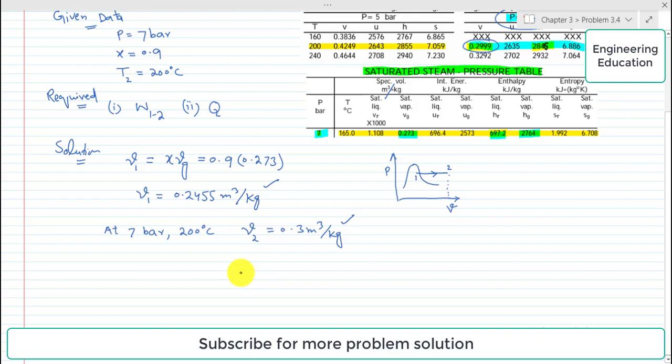Also, for finding the work input, we have the expression: work from 1 to 2, that is the work input required, equals minus P times (v2 minus v1), as this is isobaric expansion and the pressure is given.